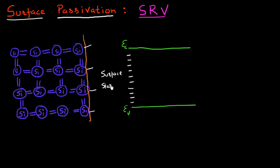These surface states act as very good recombination centers. For example, if I have an electron in the conduction band and a hole in the valence band, when they reach near the surface they can utilize this surface state as a trap center and use that to recombine. So why is this problematic for a solar cell?